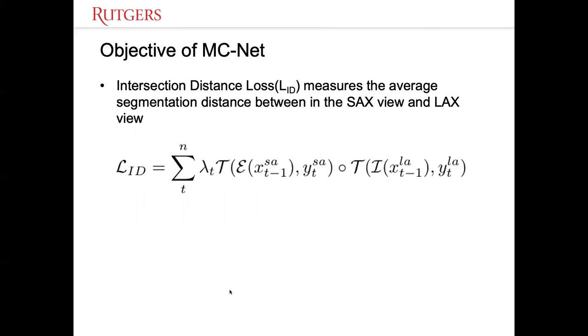After we calculate the Euclidean distance map, we can get the intersection distance loss, which measures the average segmentation distance between the short axis view and the long axis view. L-ID is defined as follows.